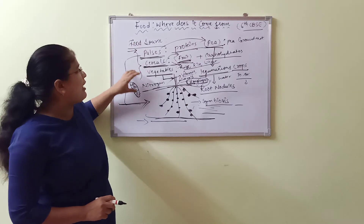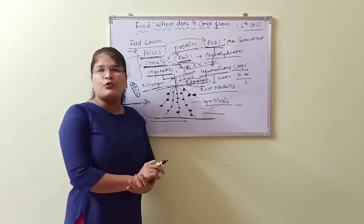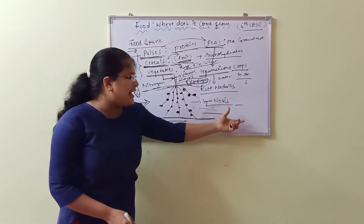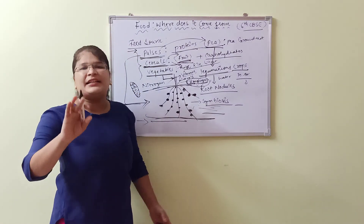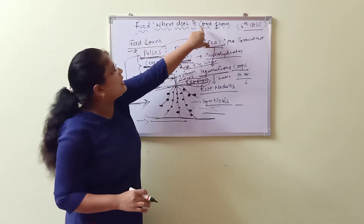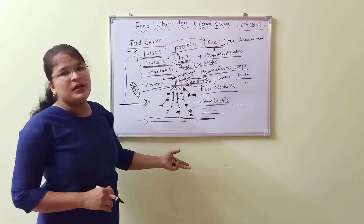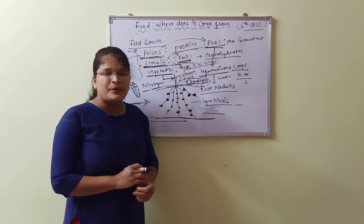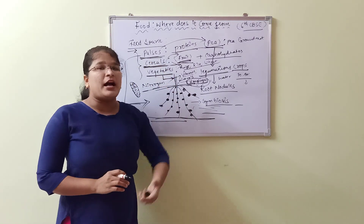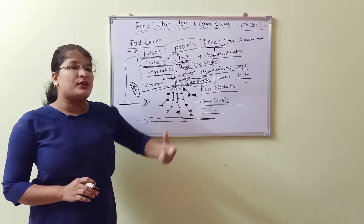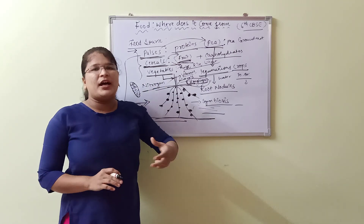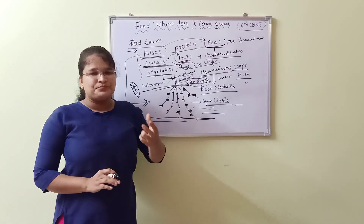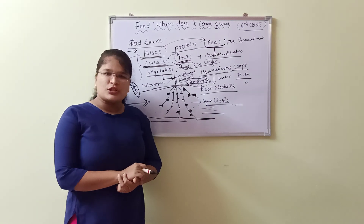To summarize the food resources from plants: pulses, cereals, and vegetables are the main food sources. Plants are eaten by animals, and every animal directly or indirectly depends on plants only. This answers the question 'Where does food come from?' — it comes from plants. In the next class, we will discuss plant structure, different food habits, methods of cooking, and why different people in different areas have different food habits.